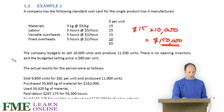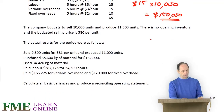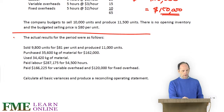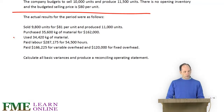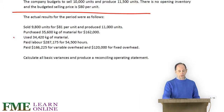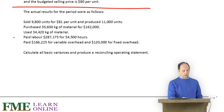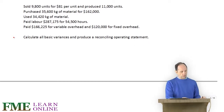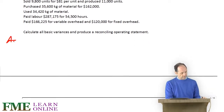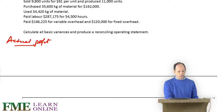So that is the budgeted profit. What actually happened was completely different. We sold 9,800 units for $81 per unit and produced 11,000 units. All the costs were different — the amounts used whether for material or labour hours and so on. What we can do right now is check what the profit actually was, so we know what difference we are having to reconcile.